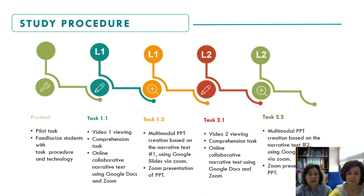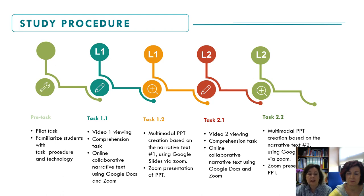Here you can see the scheme of the student procedure. We started with a pre-task for students to get familiar with the real task, and then we had two different tasks developed in two phases. In the first part, students wrote or prepared a narrative text, and in the second part, they transferred this narrative text into a multimodal text.